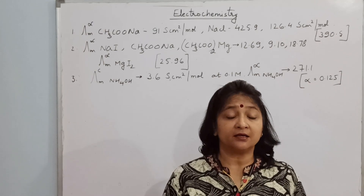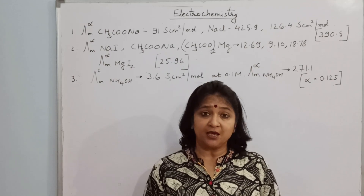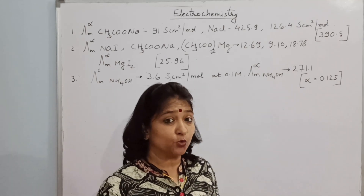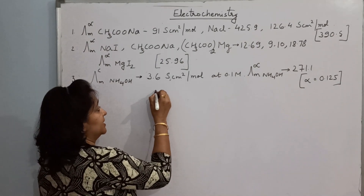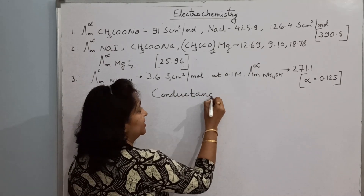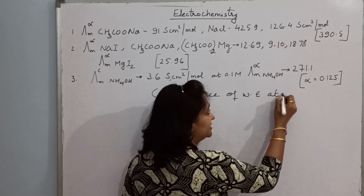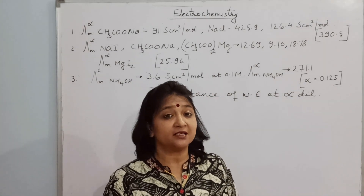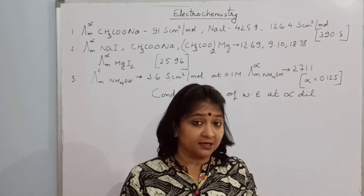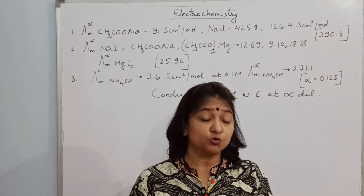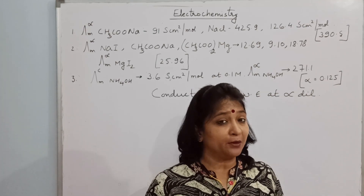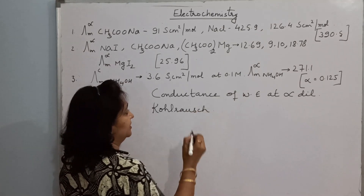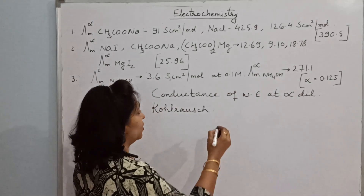Now we will go towards conductance of weak electrolyte at infinite dilution. When a weak electrolyte is diluted a lot, its conductance increases. A weak electrolyte does not dissociate completely — it needs more water to dissociate, meaning it needs to be infinitely diluted. This was covered in our first class.